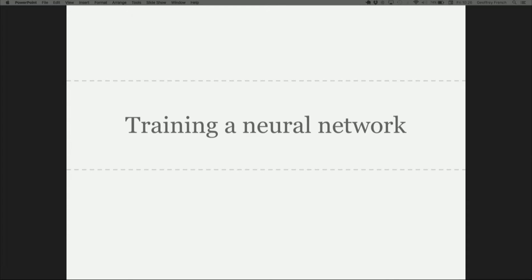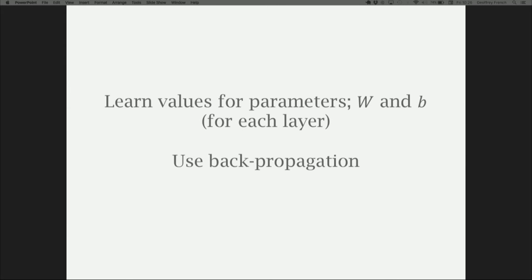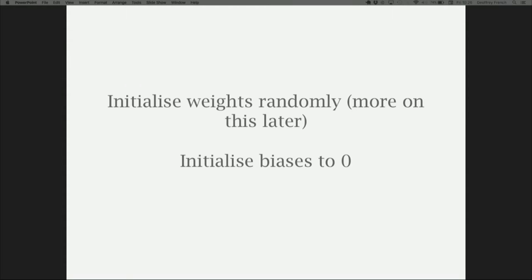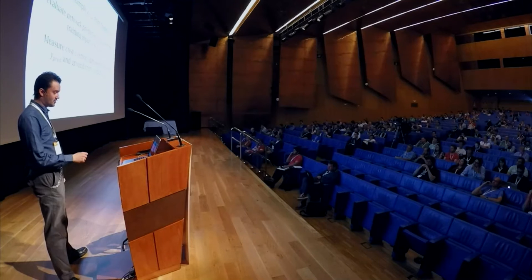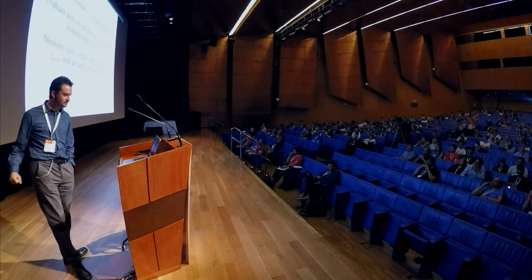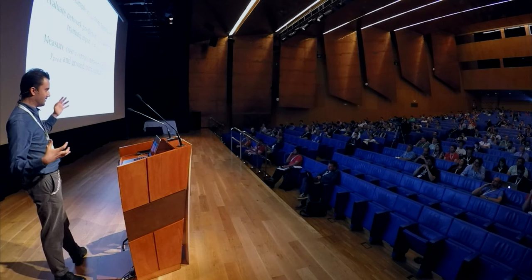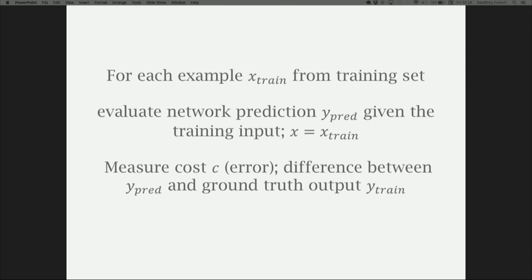How do we train a neural network? We need to learn values for our parameters — the weights and biases for every layer — and for that we use backpropagation. We initialize our weights randomly and the biases all to zero. For each example in our training set, we evaluate the network's prediction, compare it to the actual training output, and measure our cost function, which is roughly the error — the difference between what our network predicts and what it should predict.